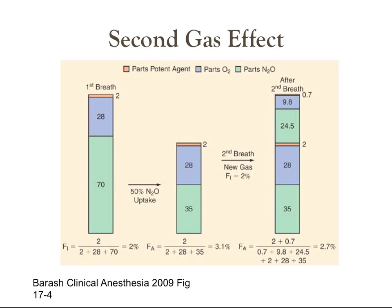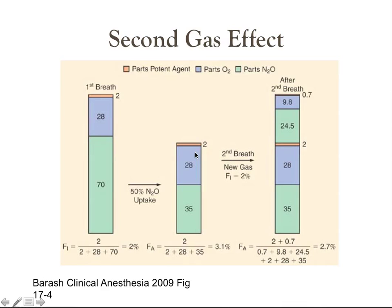Next, we'll talk about the second gas effect, which occurs when a potent anesthetic is combined with nitrous oxide. Consider administering 2% of a potent anesthetic in 70% nitrous oxide and 28% oxygen. Nitrous oxide, with its extremely high partial pressure despite low solubility, partitions into the blood more rapidly than the potent anesthetic, decreasing the alveolar nitrous oxide concentration — for this example, by 50%, so 35 parts are taken up. This leaves 35 parts nitrous oxide, 28 parts oxygen, and 2 parts of the potent agent in the alveoli, so the potent anesthetic is now present at a concentration of 3.1%, up from 2%. The potent agent has been concentrated and FA has increased.